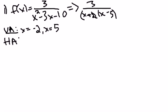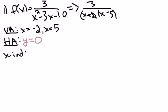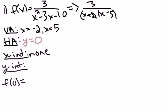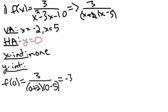That's where the denominator is zero. The horizontal asymptote — notice the degree of the bottom is bigger, so the horizontal asymptote is going to be y equals zero. For the x-intercepts, there are none in this case. To find those you would set the numerator equal to zero, but the numerator is just a constant and will never be zero. The y-intercept is when x is zero, so plugging in zero gives us negative three-tenths.